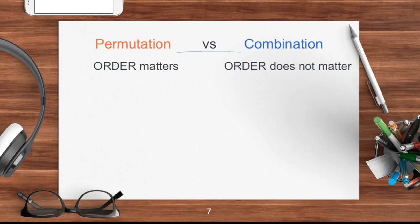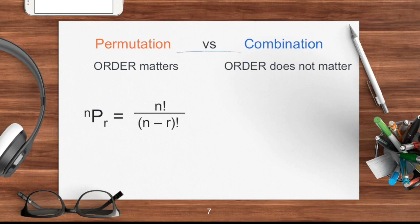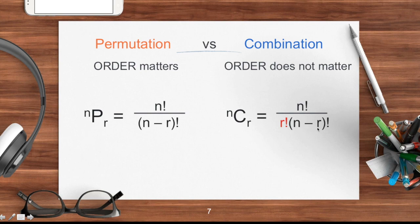For permutation, the order matters, while in combination, order doesn't matter. When you answer problems involving counting techniques, make sure you identify whether the order matters or not, because in some questions it is not specifically stated. You should be the one to identify that. The formulas are different: permutation of n taken r equals n factorial divided by n minus r factorial, while combination nCr equals n factorial divided by r factorial times n minus r factorial — there is an additional r factorial.